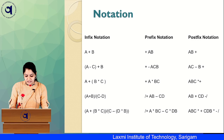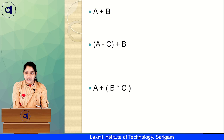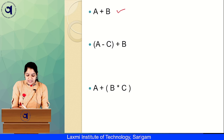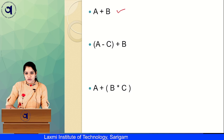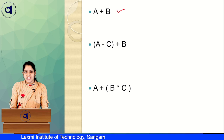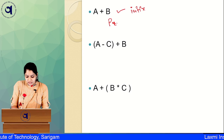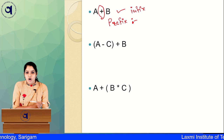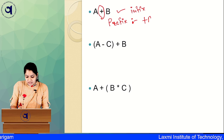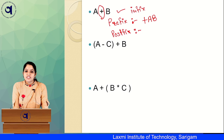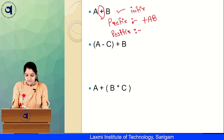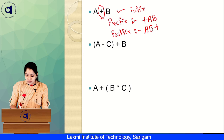Here are some examples of infix, prefix, and postfix notation. We will see one by one how conversion is done. First, we have 'a + b'. This is the infix form. If we want to convert it into prefix, since there is only one operator and two operands, we simply move the operator before the operands: '+ab'. For postfix, we move the operator after the operands: 'ab+'.